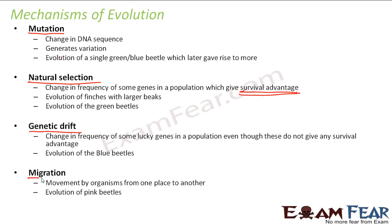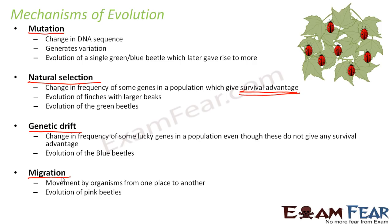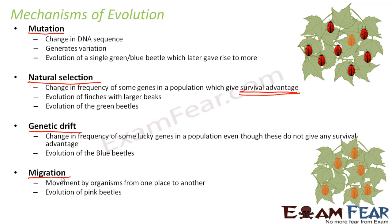The last mechanism is migration — movement of organisms from one place to another. For example, suppose there is an area inhabited by red beetles, and one orange beetle comes from somewhere and enters their territory. Gradually it reproduces, and the number of orange beetles increases in the same area. So sometimes because of migration, new organisms evolve in a region. These are the mechanisms which drive the phenomenon of evolution.